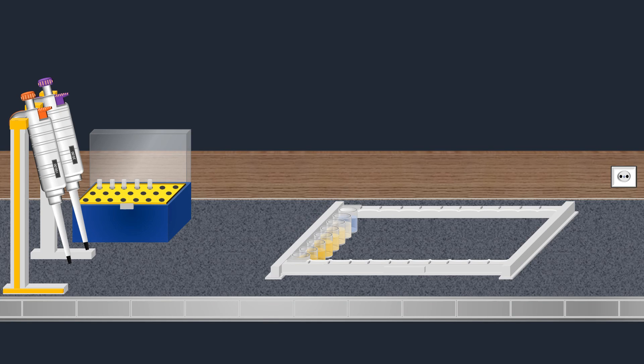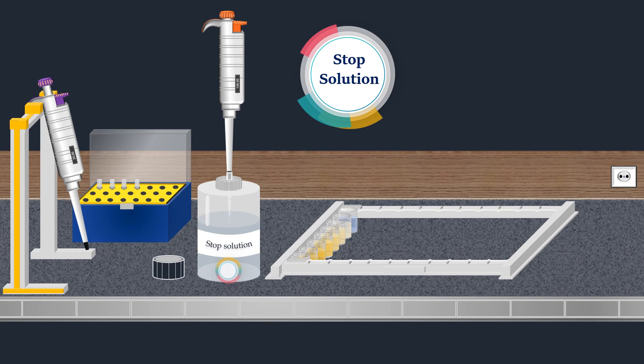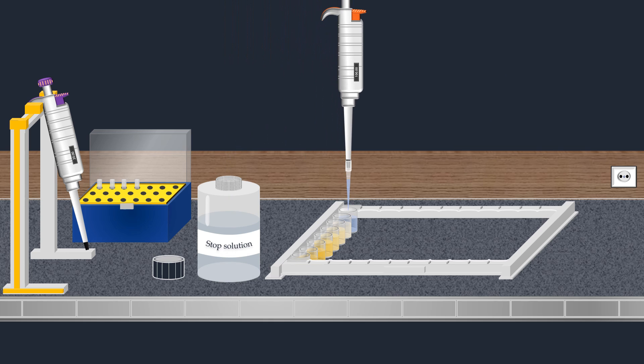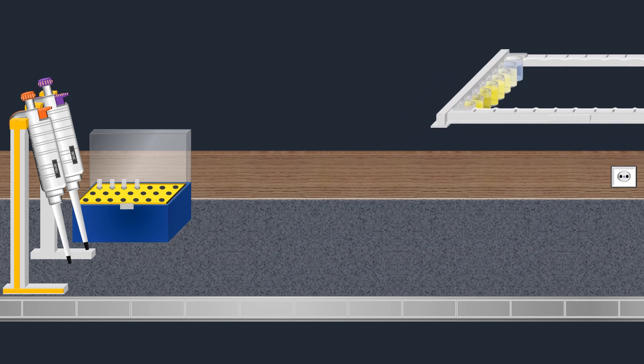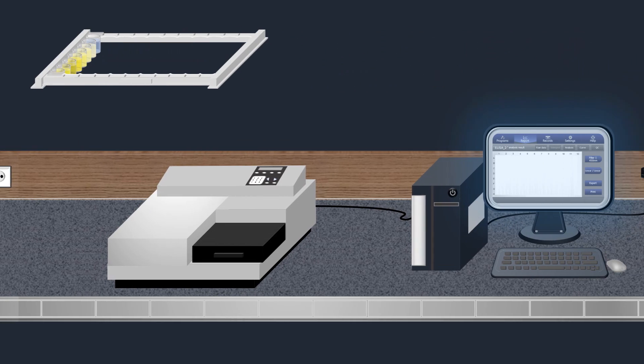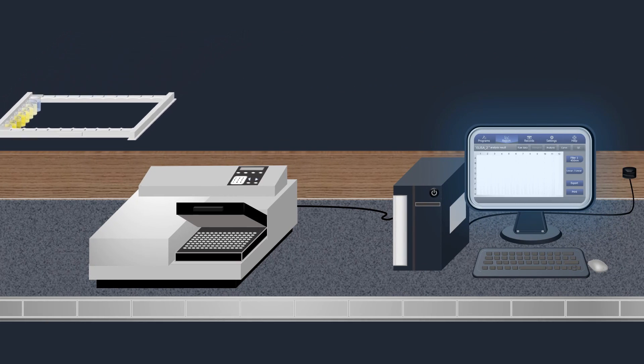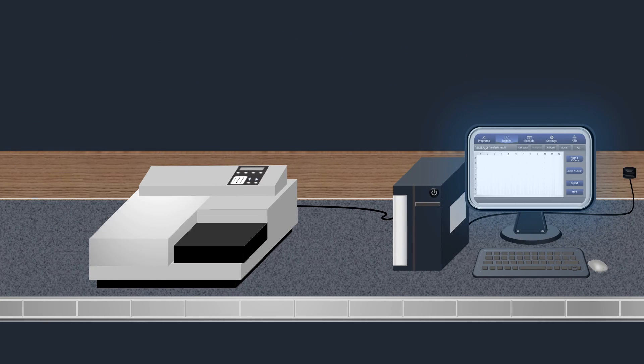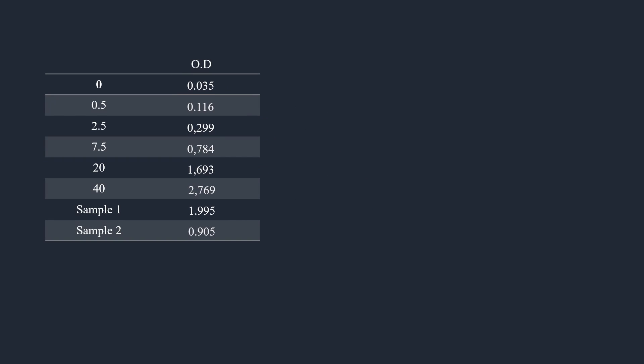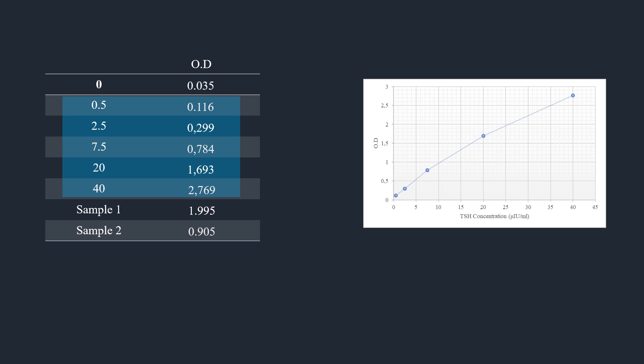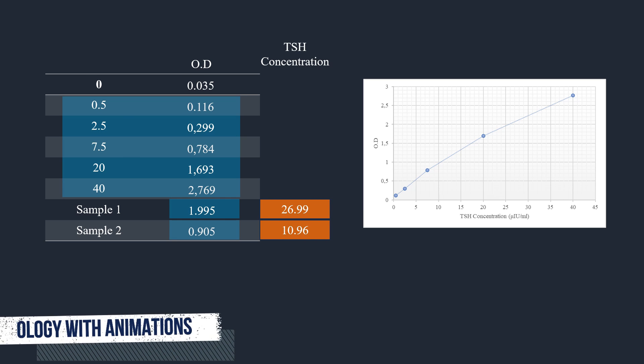Next, prior to photometric detection, the reaction is commonly stopped by increasing the pH of the reaction mixture, using a strong base such as NaOH. Finally, a spectrometer instrument is utilized to measure the absorbance in each well, allowing for the quantification of TSH levels. Using the absorbance values of standard points, a calibration curve is constructed. This curve enables the determination of TSH concentration in samples.